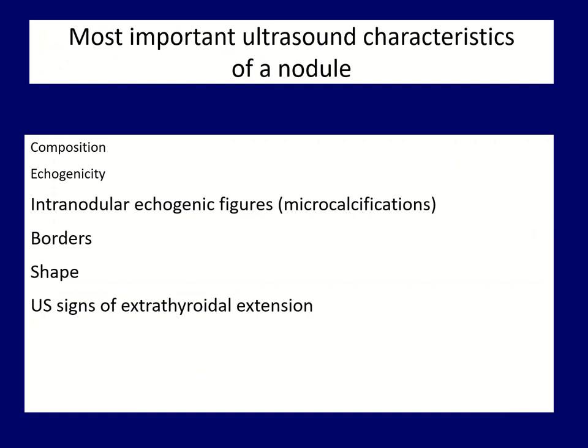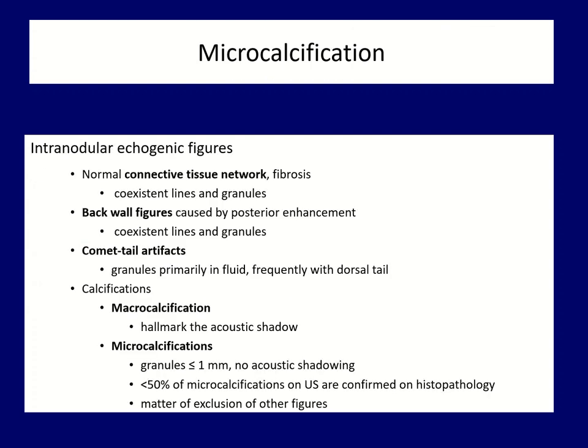In one of the very first cases, I already spoke about the definitions of nodule echogenicity and composition. Microcalcification belongs to the family of internal echogenic figures, which consists of five different features. The first is the fine spider web-like connective tissue network of the thyroid, both the nodular and non-nodular tissue. In hypoechoic thyroid this can be pronounced. The second is the back wall figure, which is indeed an optical artifact caused by back wall posterior enhancement. These two structures are characterized by the synchronous presence of echogenic lines and granules.